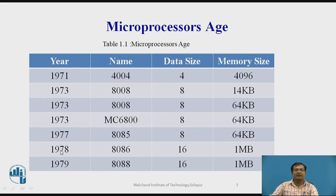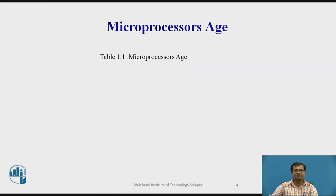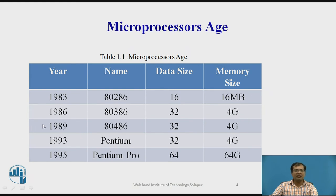Then in 1978, the 8086 was introduced with a 16-bit data size supporting 1 MB of memory. In 1979, the 8088 was introduced, also with a 16-bit data size and 1 MB memory. In 1983, the 80286 was introduced with a 16-bit data size and 16 MB memory. In 1986, the 80386 was introduced, and in 1989 the 80486 was introduced. In 1993, the Pentium was introduced. These three processors — 80386, 80486, and Pentium — all have a 32-bit data size and support 4 GB of memory.